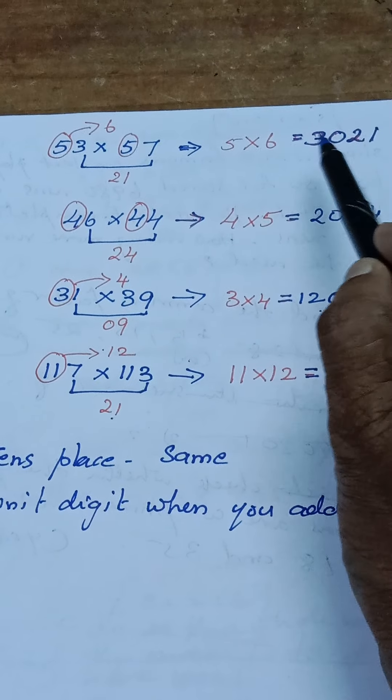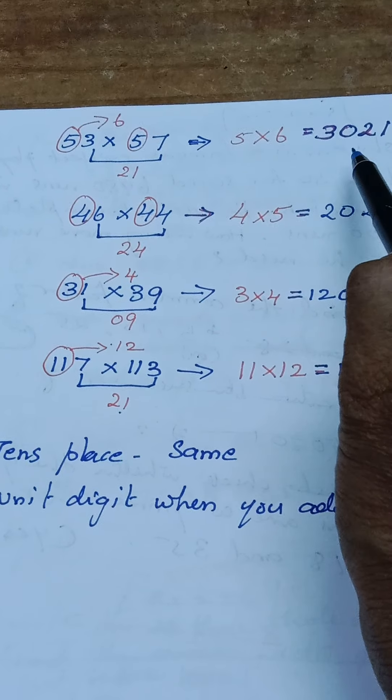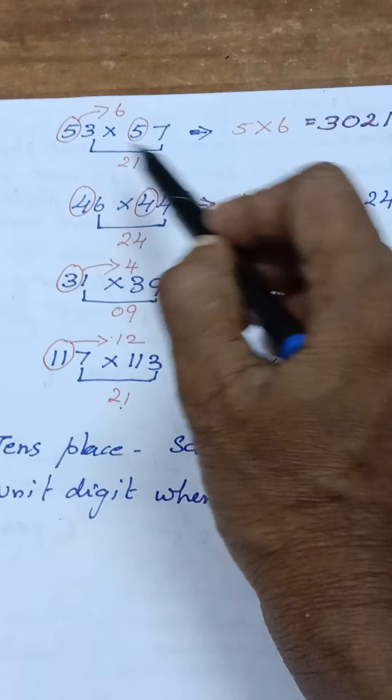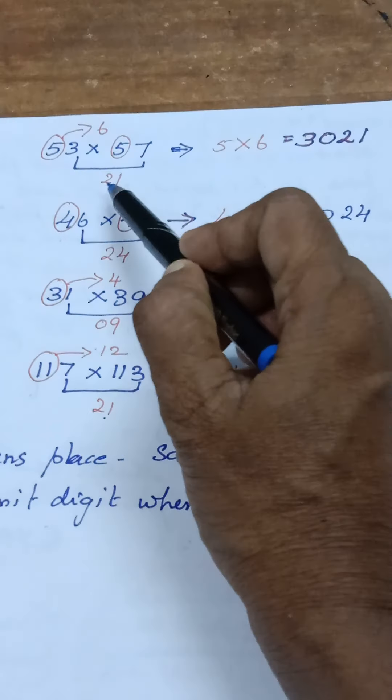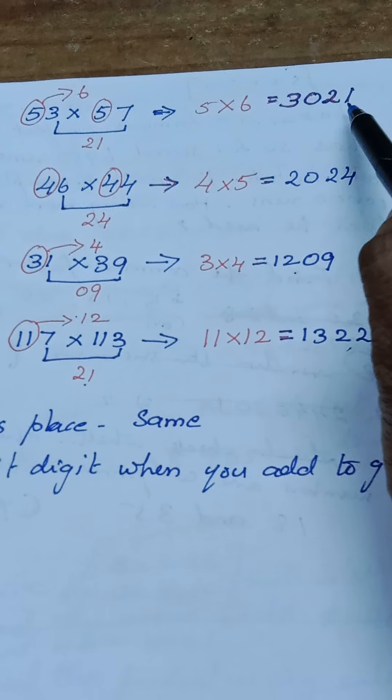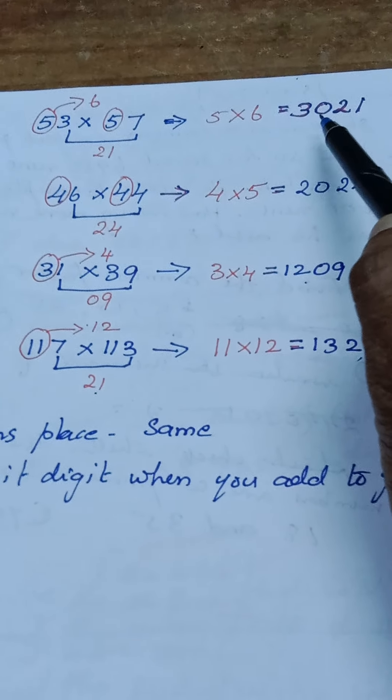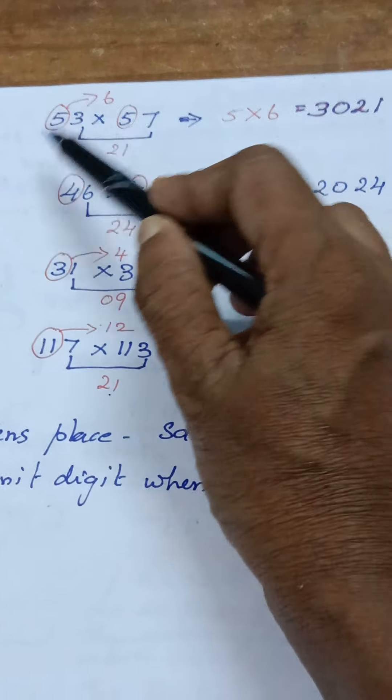So in my answer part, first part is the number what I'm multiplying. Next is unit multiplication - unit digit what I'm multiplying. 3 into 7 is 21, so this 21 I should write in my answer part last two digits. So my first two digits will be the tens place number with a successor: 5 into 6 is 30, and 3 into 7 is 21.